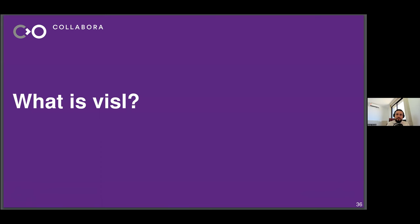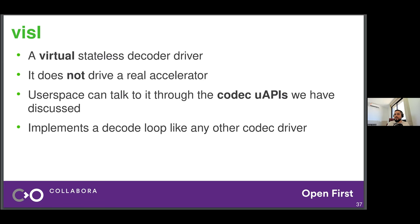Let's recap: a video codec compresses video because raw files are very large. We can do it faster using less power with hardware acceleration. If we use hardware acceleration, we need a driver and an API to talk to it. This presentation is about the V4L2 API to drive V4L2 decoders and encoders, and we can finally understand what Visel is — the virtual stateless decoder driver. Visel is a virtual stateless decoder driver; it doesn't drive real hardware or a real accelerator.